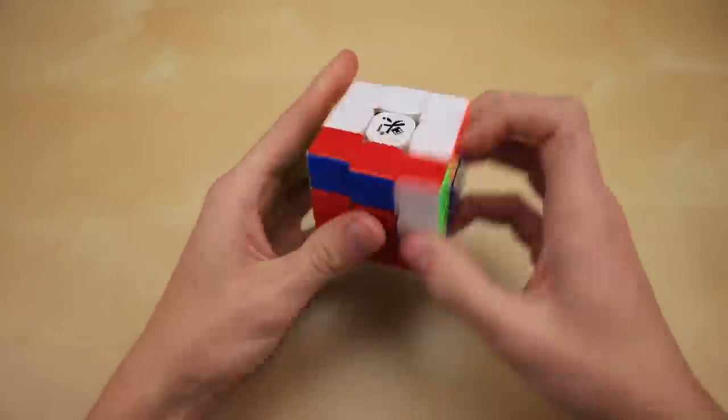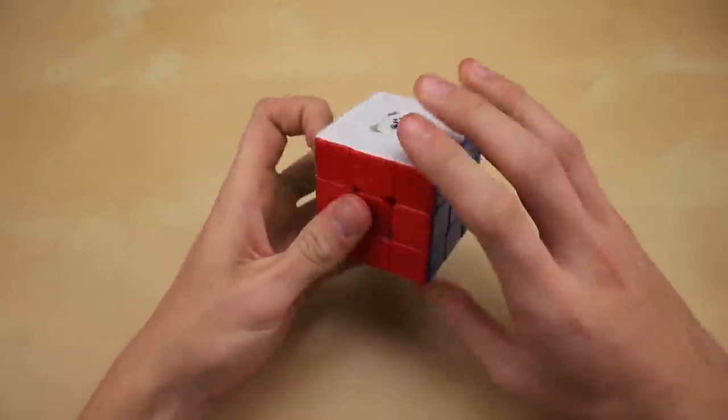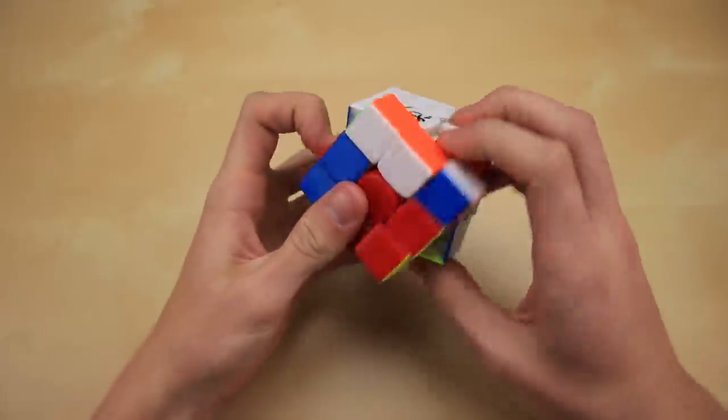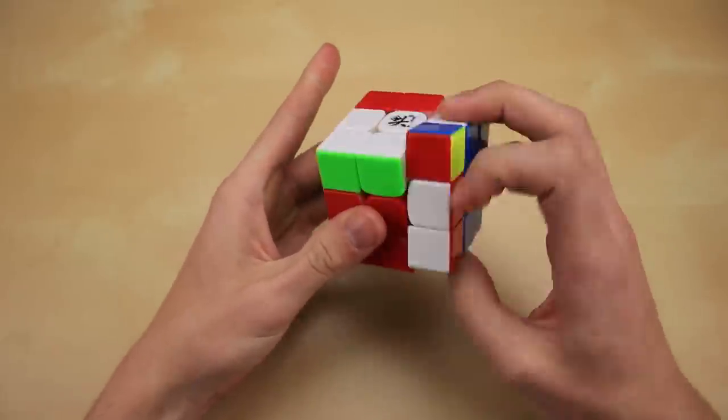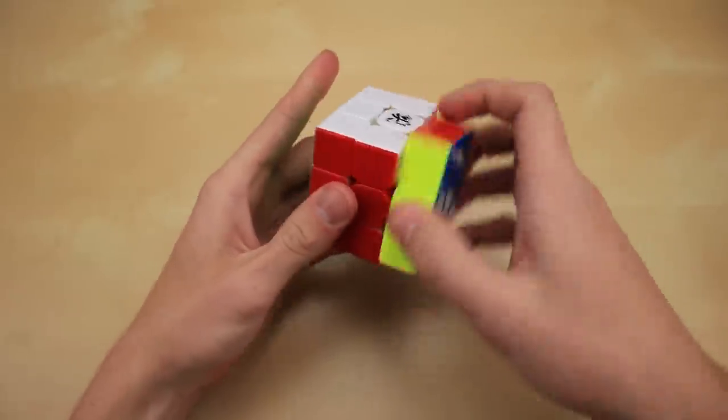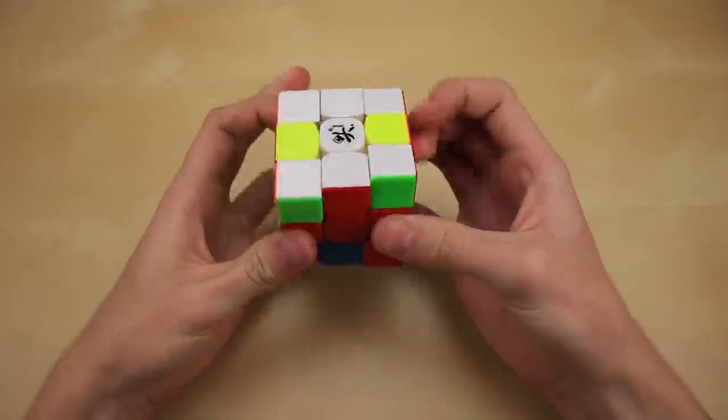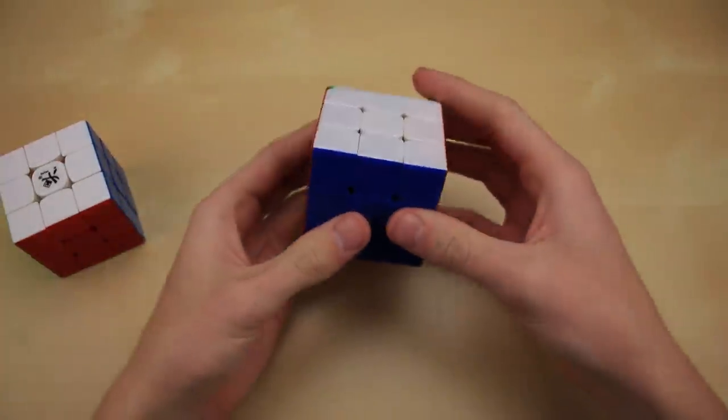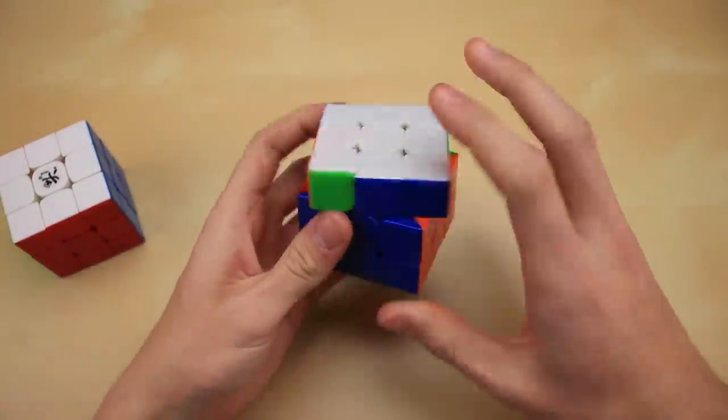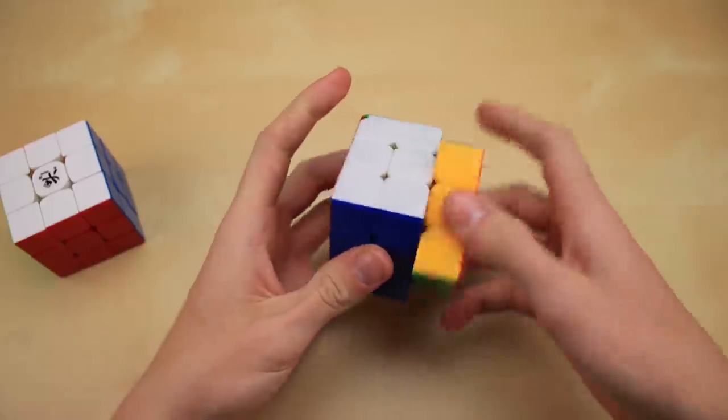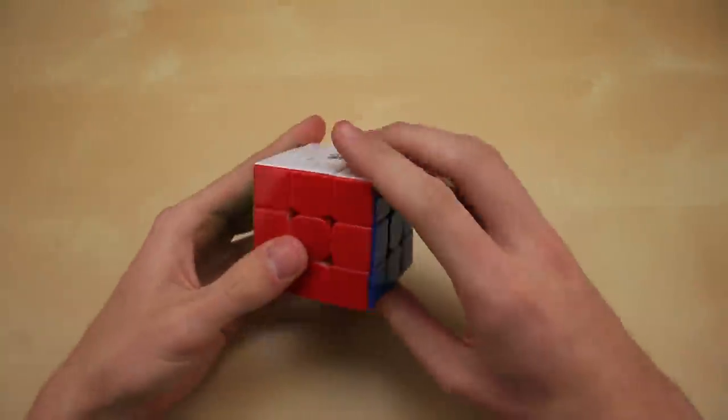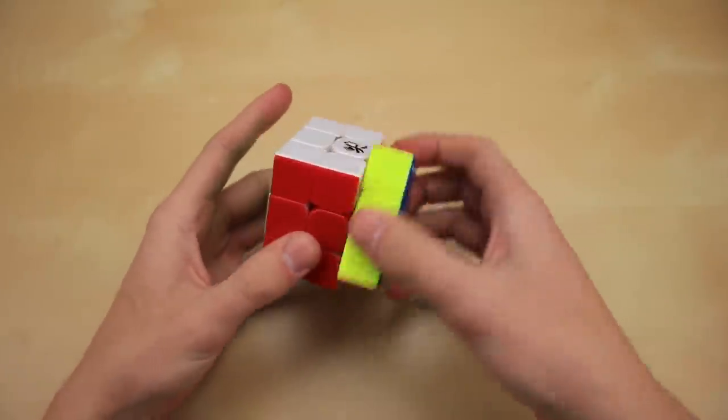Ooh, that's interesting. It has a little bit of that sandy feel, kind of giving me nostalgia for old Moyu cubes when you turn them right out of the box. It's super buttery smooth with a little bit of a sandy undertone that I'm sure will go away as you break it in. I definitely wouldn't have expected this cube to feel like this. If you take a look at the old Zanchi, it's just very crunchy. You wouldn't really describe the turning as super smooth. Whereas this cube is just buttery smooth.